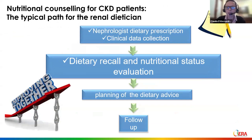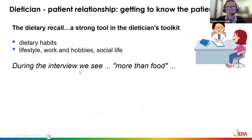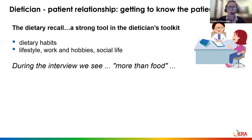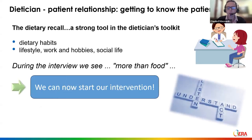What can we do with patients to improve adherence? We should start from the patient and work with the patient, because recommendations should be personalized. The typical path a renal dietitian follows starts from the nephrologist's dietary prescription. I highlight the dietary recall as a very strong tool in the dietitian's toolkit — when we ask patients about their dietary habits, we gain information not only about what they eat, but also about lifestyle, social life, who does the shopping, and who prepares food. This helps us implement a personalized and targeted intervention.